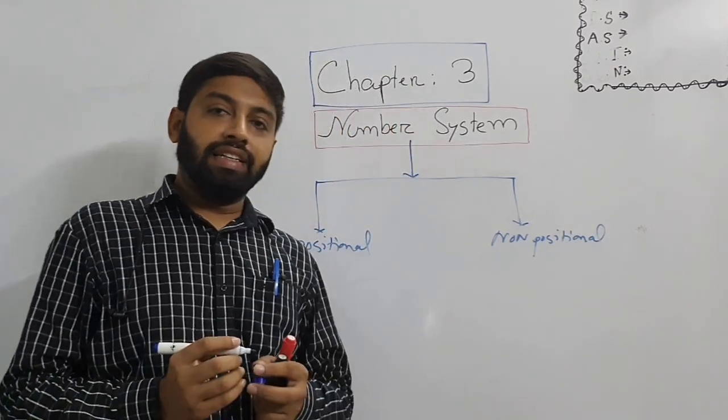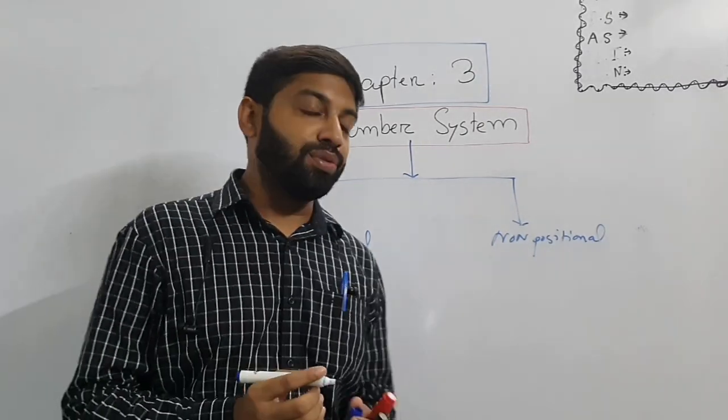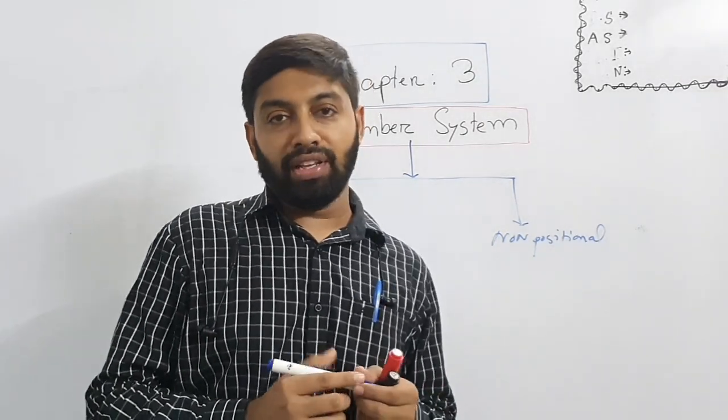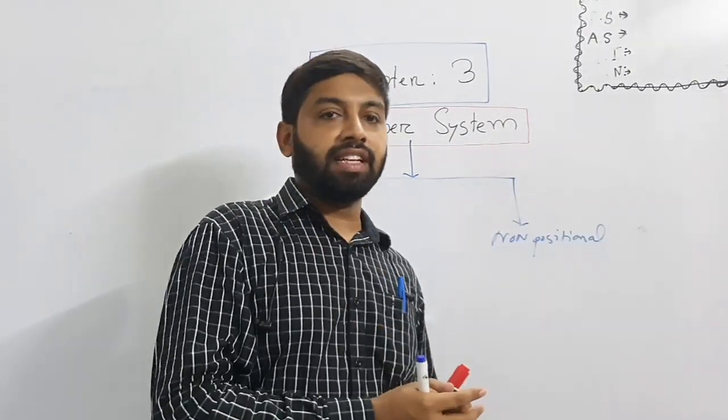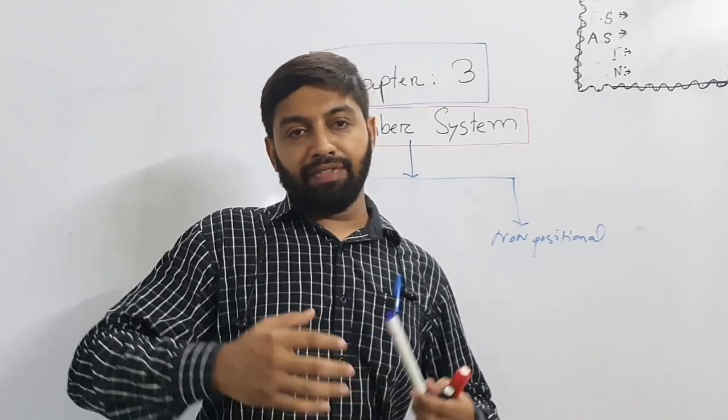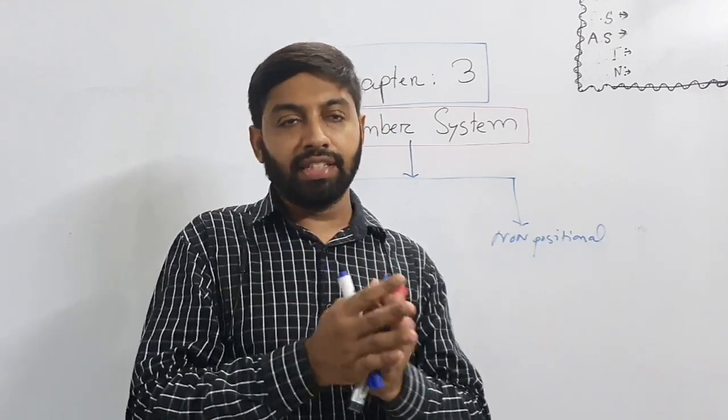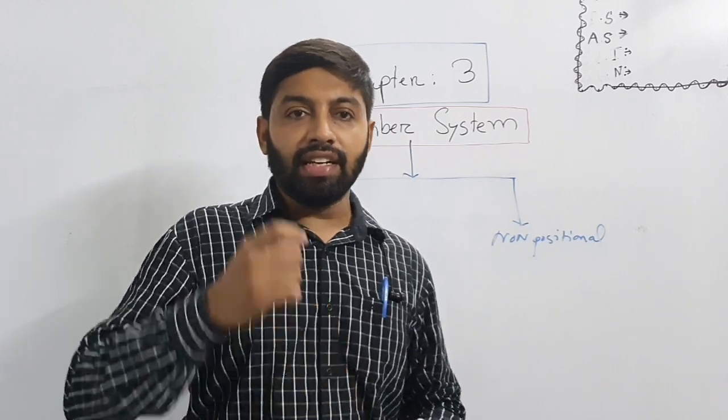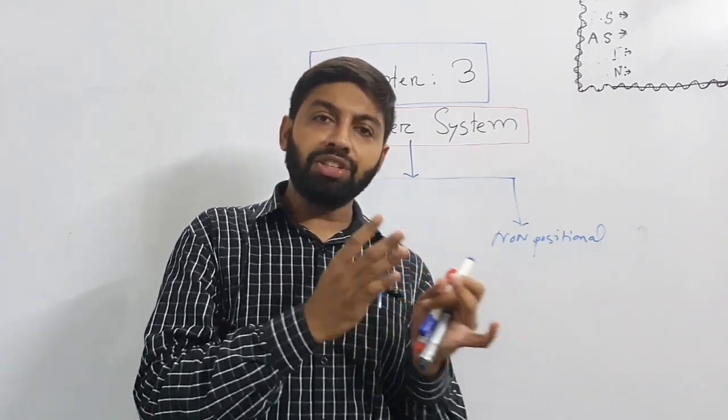Number one is positional number system and number two is non-positional number system. Positional number system means this number system, all numbers have the value when it places some positions. Every position has some sort of value it carries. When the position is changed, the value will be changed according to the position.